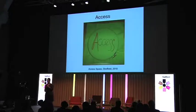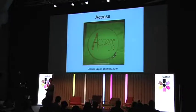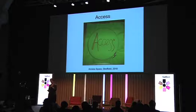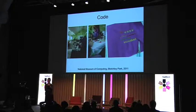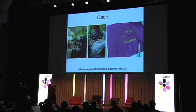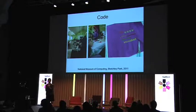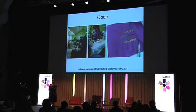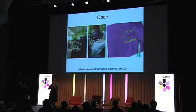Access has been stitched at Access Space, an open source, open access media lab in Sheffield run by James Wall Bank. On Friday they'll have an exhibition of Access and Kernel alongside Code, which has been stitched at Bletchley Park — the British code-breaking centre from the Second World War, where the National Museum of Computing traces the history of computing from the Witch project to the present day. The workshops there used an electronic sewing machine where you design your embroidery on a laptop, connect it to the machine, and it prints out the embroidery.